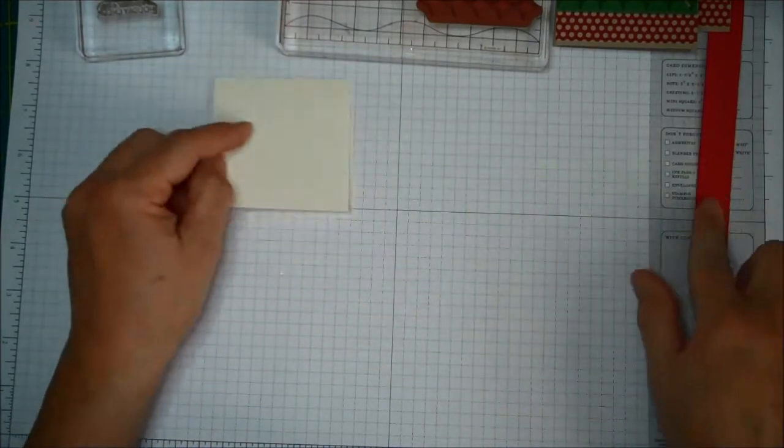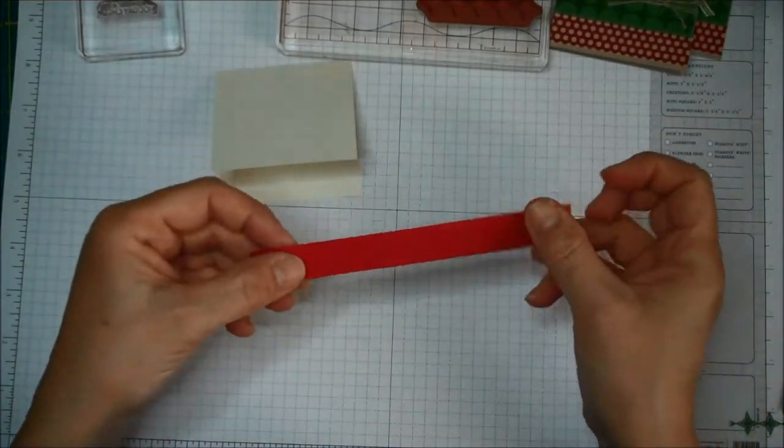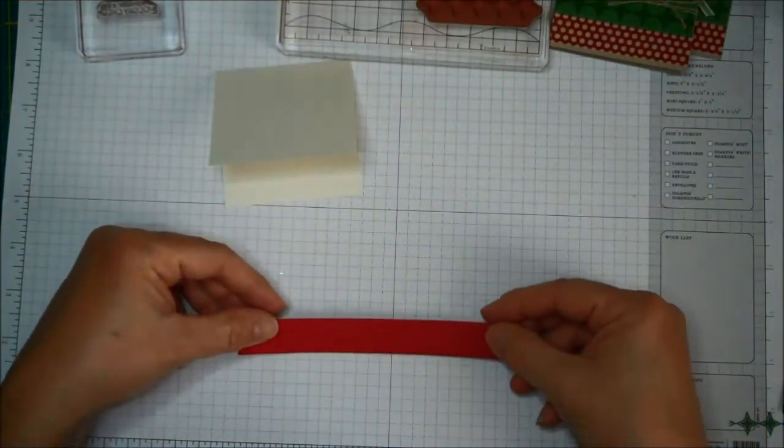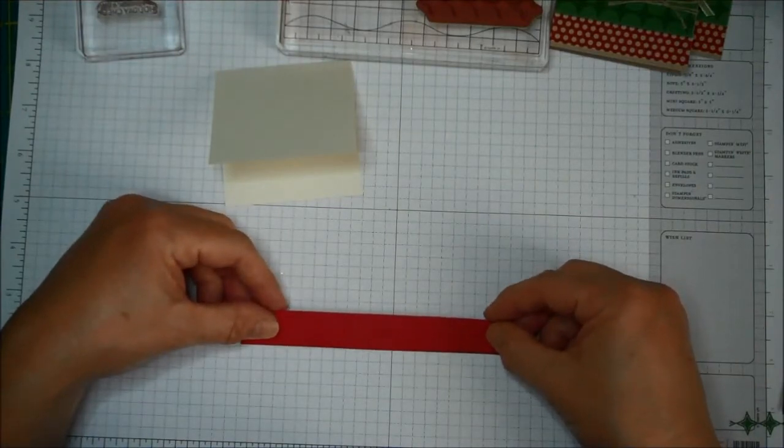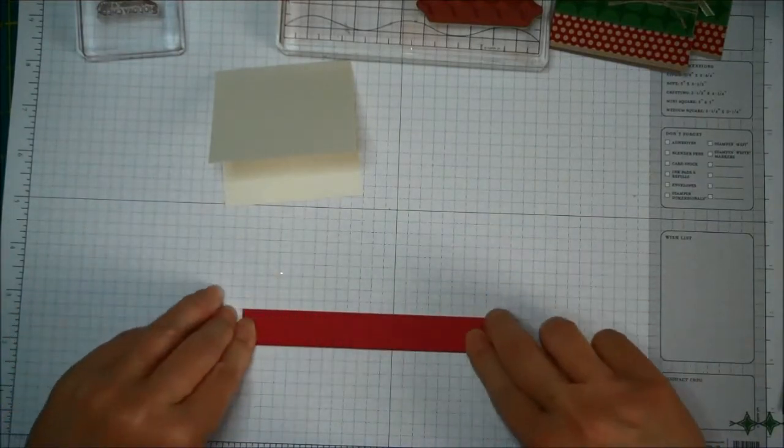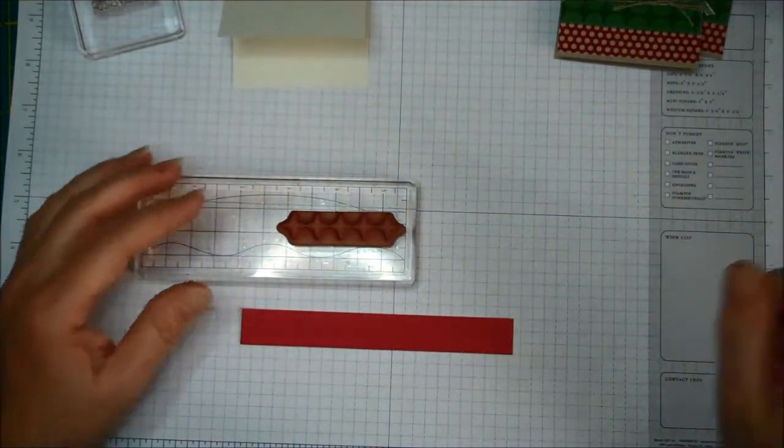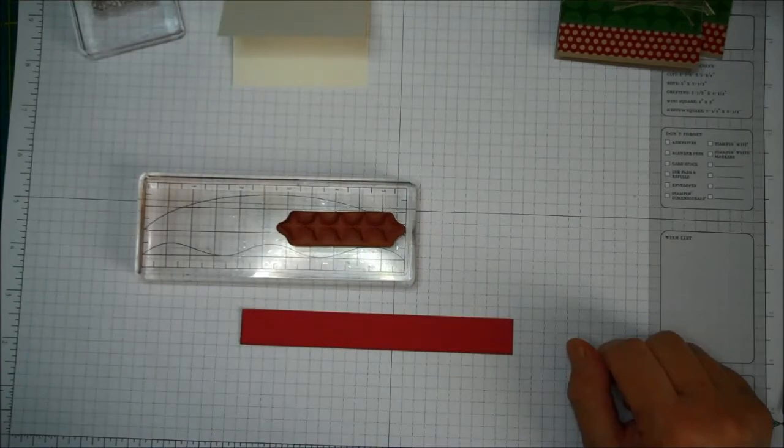So I'm just starting with this one. I have a piece of Real Red. This is about 3 quarters, and I'm going to end up cutting it 3 inches. But to start with, I just want to stamp my border. I've got my little border punch from A Banner Christmas. I'm going to use Real Red ink.